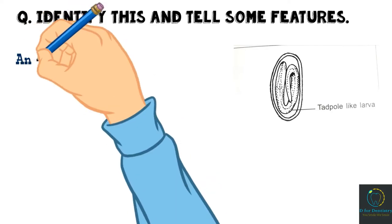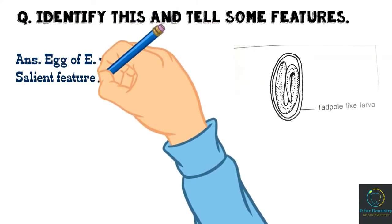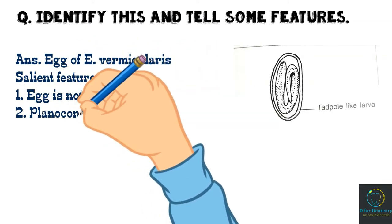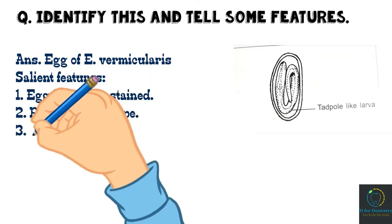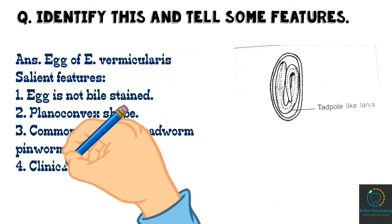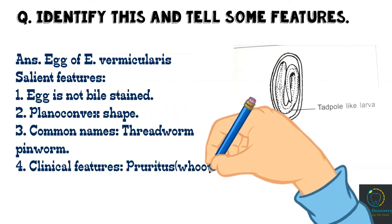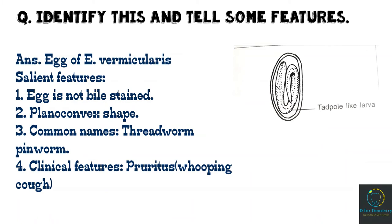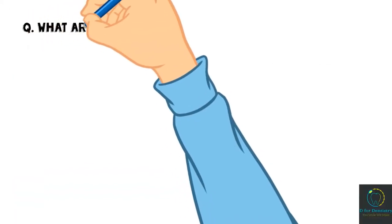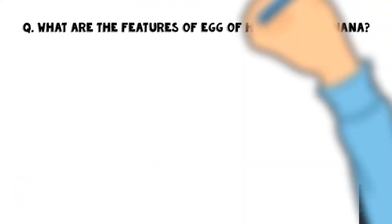Salient features: The egg is not bile-stained. It is plano-convex in shape. Common names include threadworm and pinworm. Clinical features include pruritus ani.